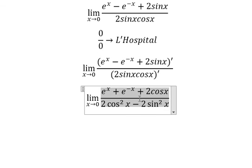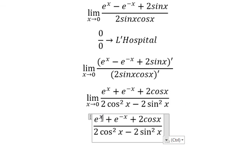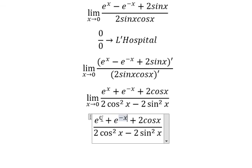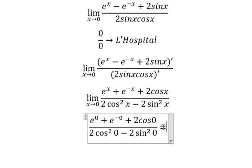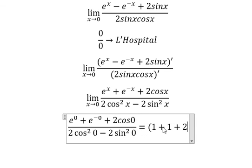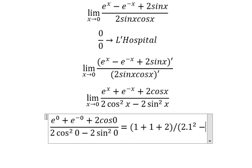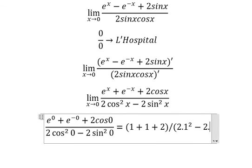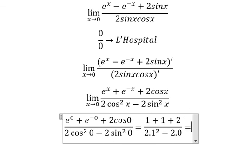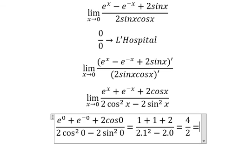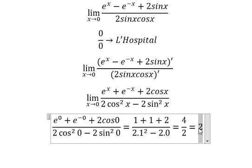Now in this situation we put number zero in, and you will get 1 plus 1 plus 2 over 2 times 1² minus 2 times 0. Then we get 4 divided by 2, and we get number 2. This is the final answer. That's it, and thank you for watching.